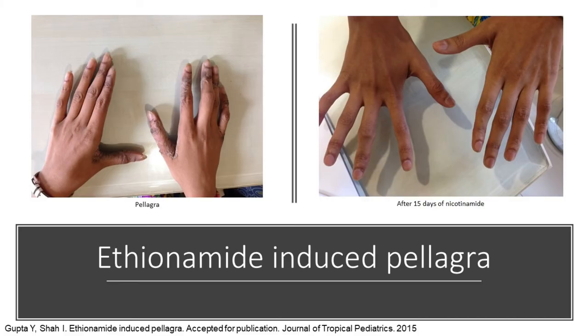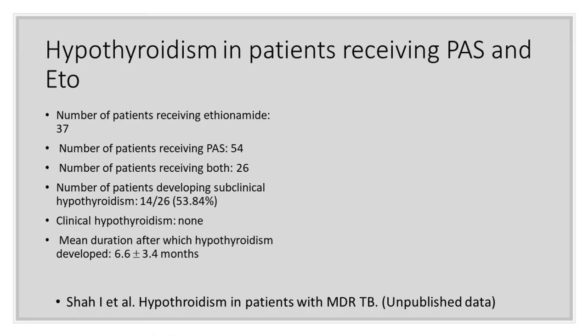Other issues include micronutrient deficiency — a girl developed pellagra due to ethionamide, so instead of just focusing on pyridoxine, we also need to keep in mind malnutrition and micronutrient deficiency due to medications. Regarding hypothyroidism, especially when giving PAS and ethionamide together, 53% of our patients developed subclinical hypothyroidism; none had clinical hypothyroidism and most developed it within six months. You need to monitor thyroid function and put them on supplements. The good news is this hypothyroidism resolves once the drugs are stopped.